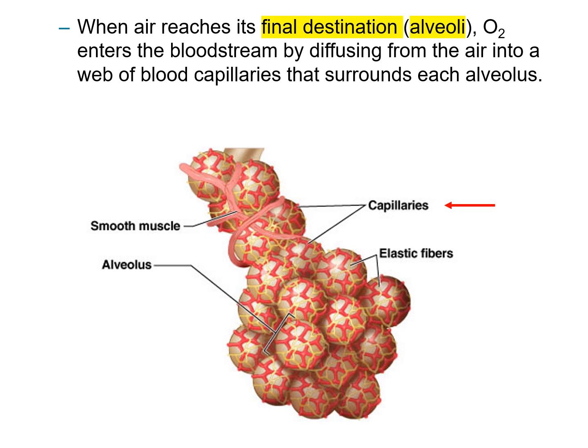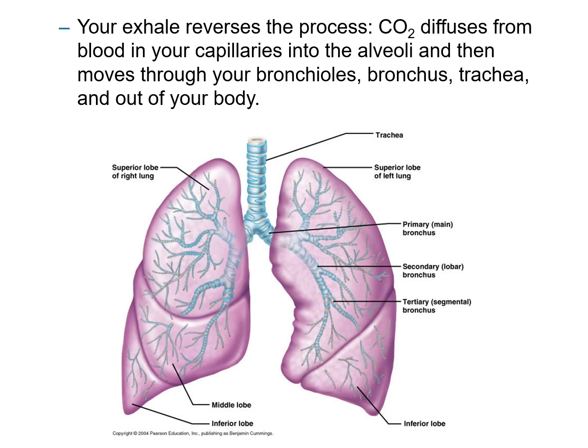When air finally reaches the alveoli, oxygen enters the bloodstream by diffusion from the air, and carbon dioxide diffuses from the capillaries into the air sac. The capillaries are wrapped around the alveoli. Your exhale reverses the process: carbon dioxide diffuses from the blood into the capillary, into the alveoli, then moves through the bronchioles, bronchi, trachea, and out through the nasal or oral cavity. This completes the path of air in and out of your body.